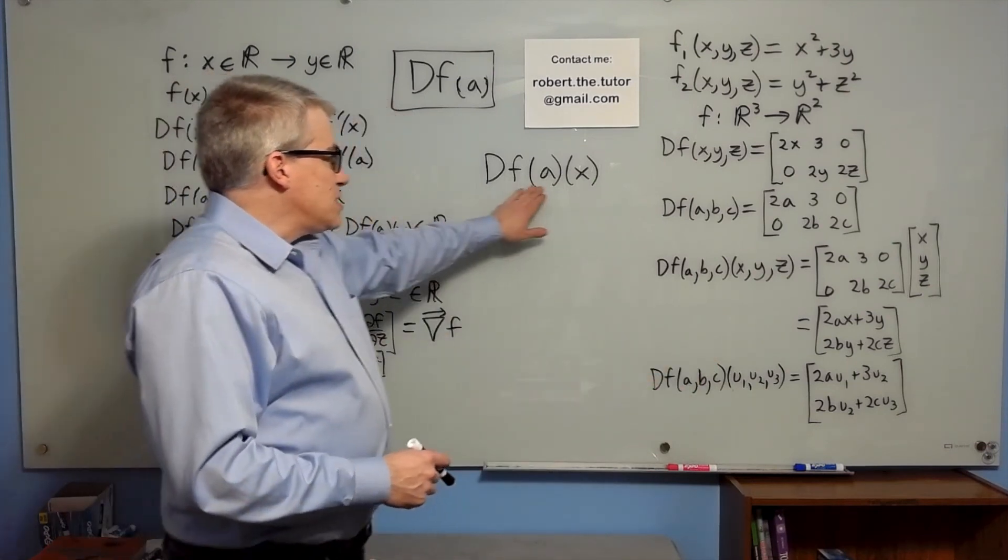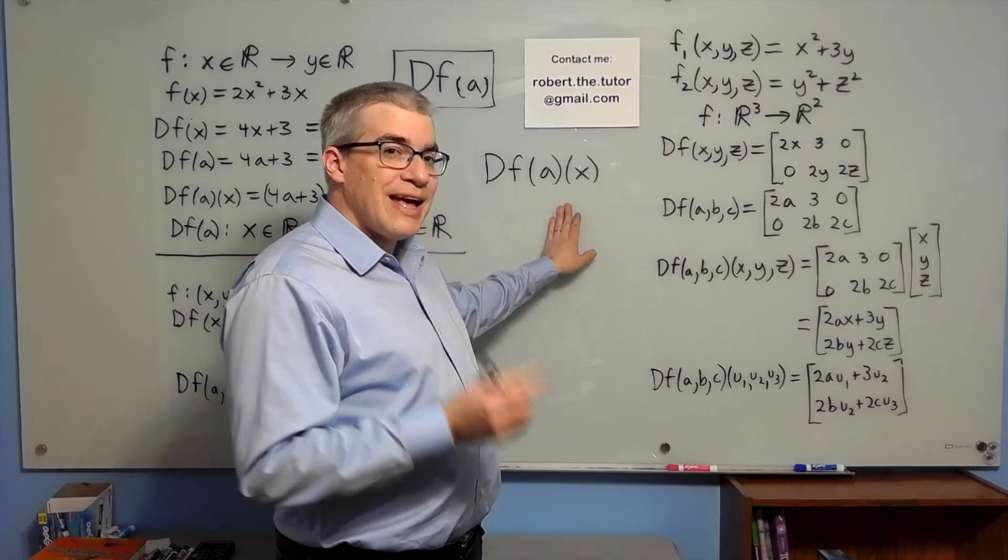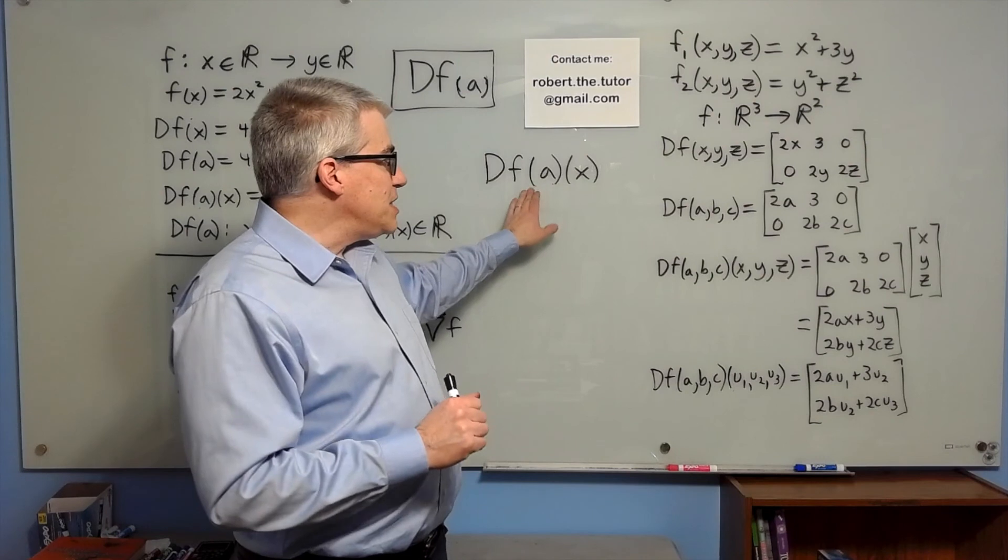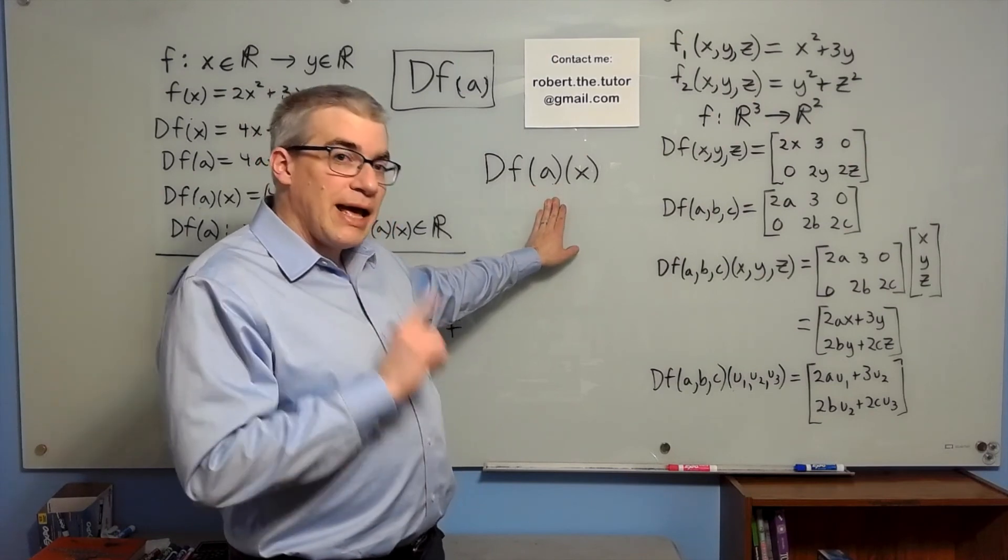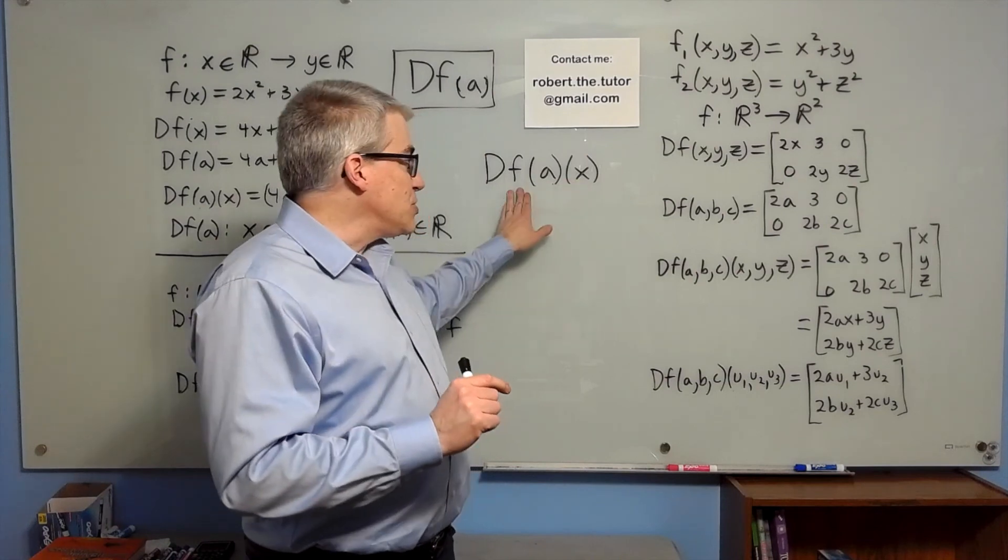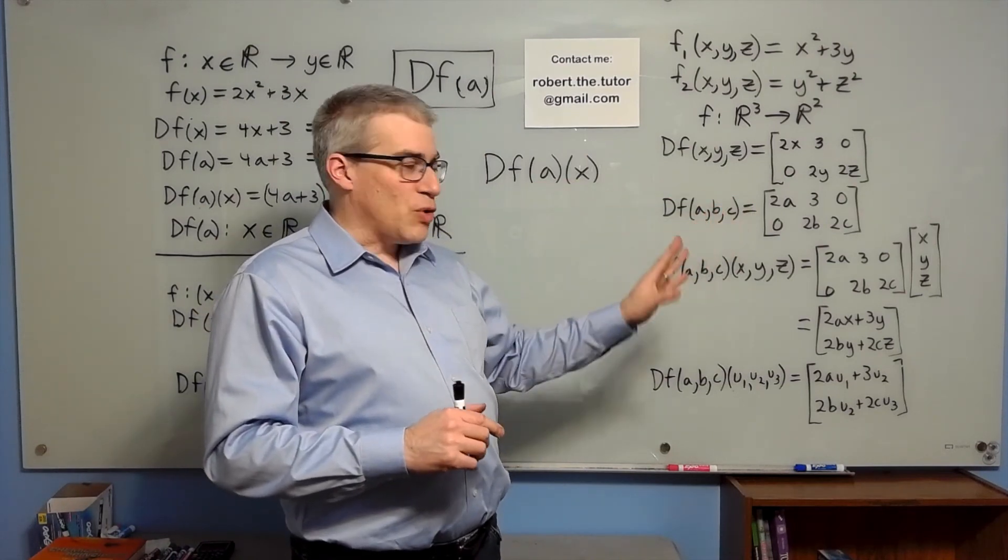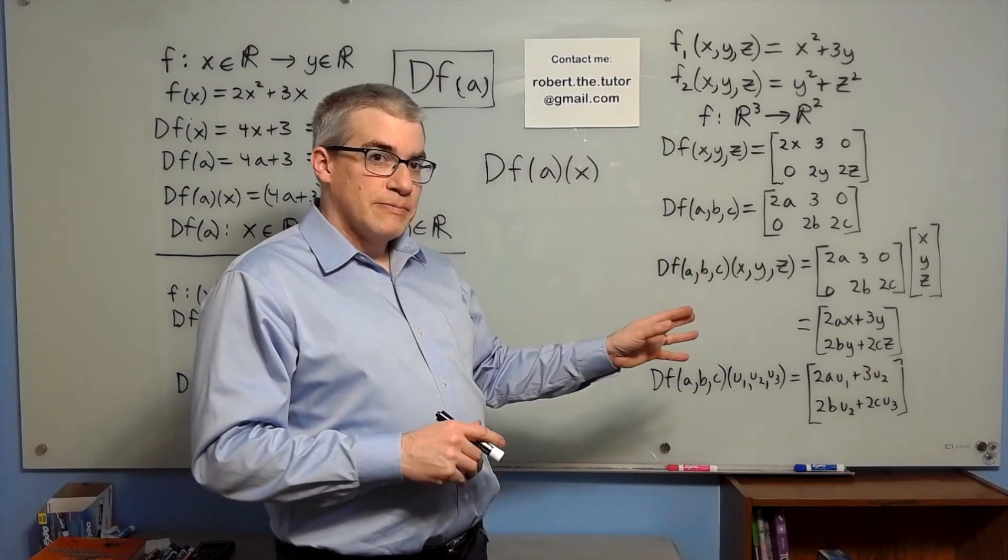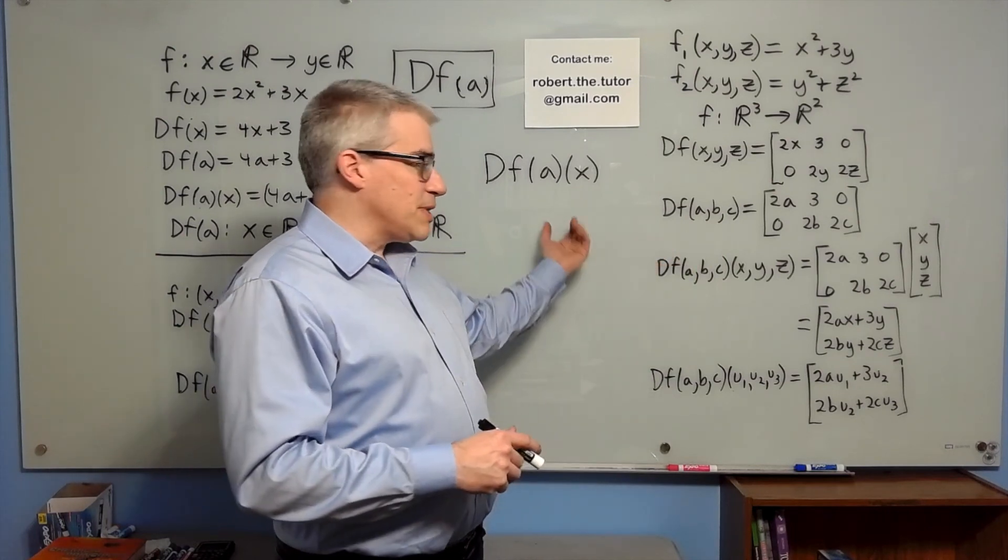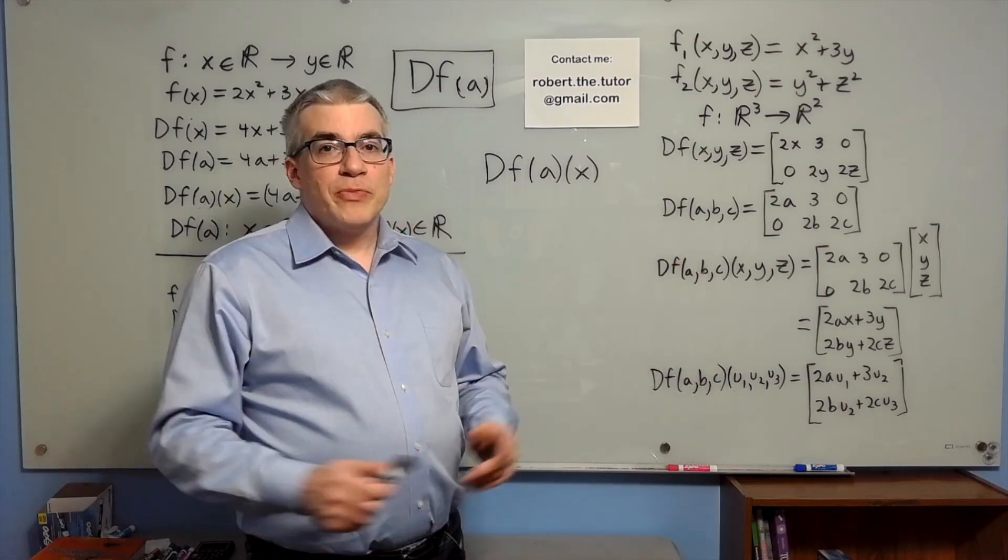That's why this thing has two inputs. df of a is a linear transformation. f is not. And df of a is not linear in a. It's only linear in x because essentially it's just giving you the grid of all the slopes of all the functions at that point. And then you dot it with a unit vector and get a directional derivative for each component. I hope that clears up the concept.